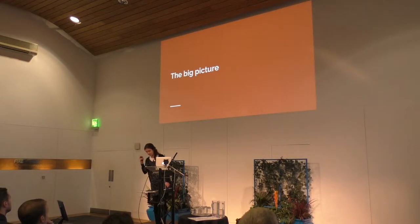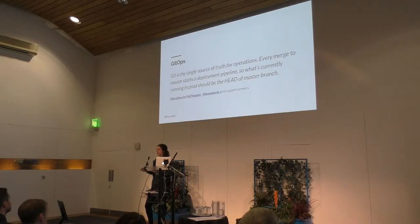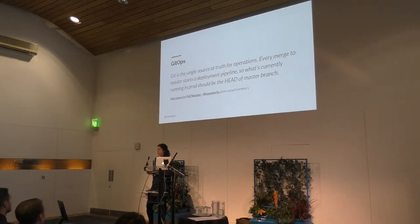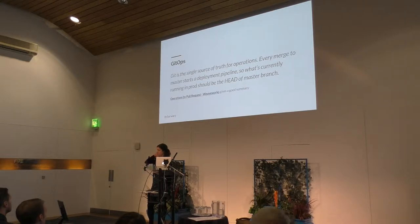So the first thing that I wanted to go with, and this is how we solved it, was getting the actual big picture. And what we went with was GitOps. It's basically this idea of having all of your orchestration and all of your infrastructure represented as code. A deployment only ever happens through a deployment pipeline, and whatever's running should be the head of the main branch. So every time someone submits a pull request or a merge request, once that's merged, that's when a deployment happens.